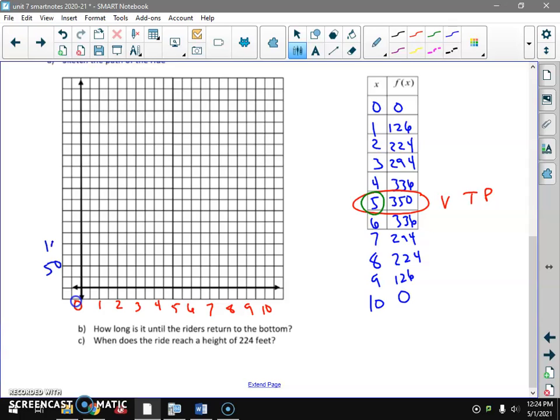50, skip one, 100. Skip one, 150. Skip one, 200. Skip one, 250. Skip one, 300. Skip one, 350. Skip one, 400. That's enough. It fits perfectly. Just like in science, you want to use your whole grid.